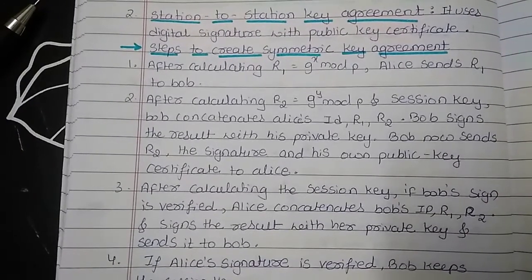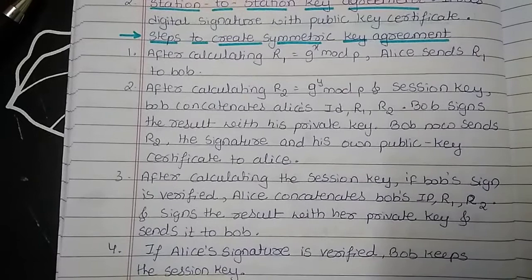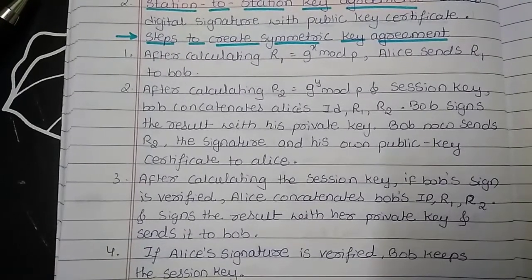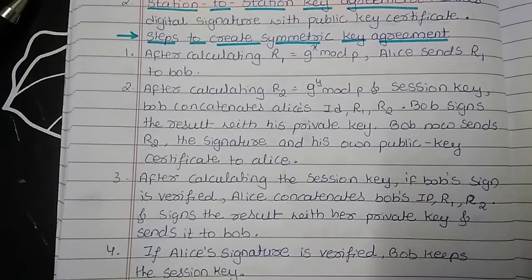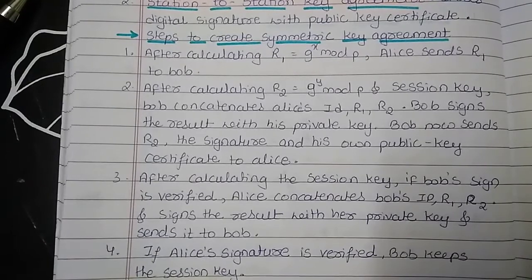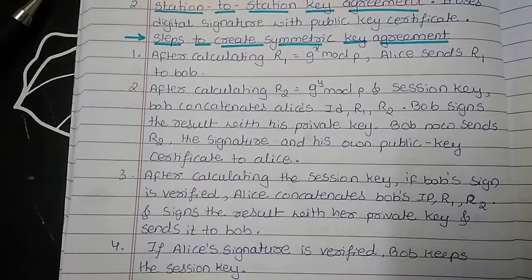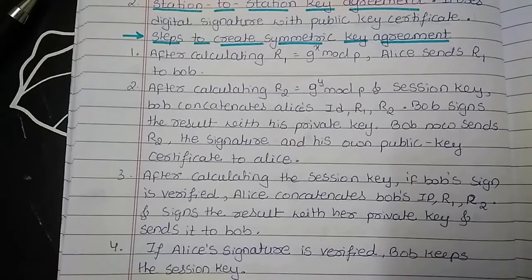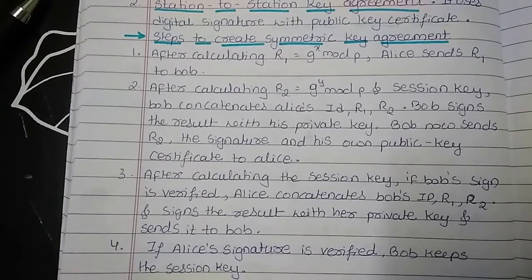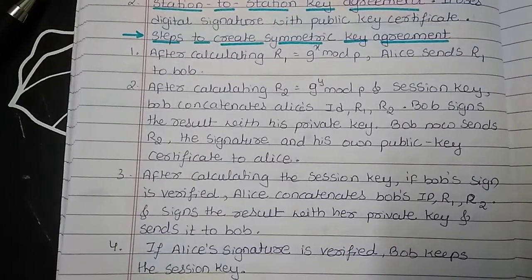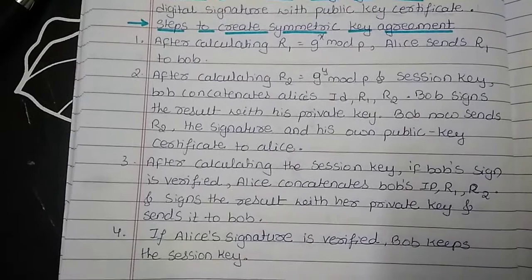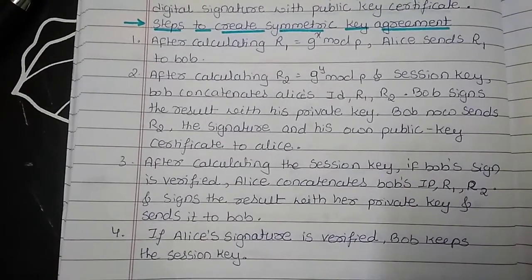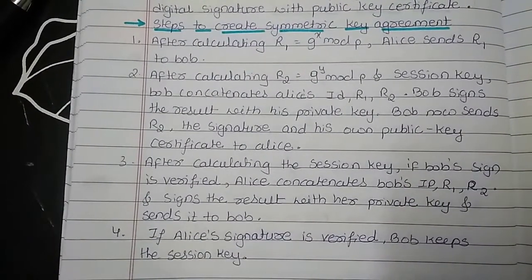On receiving all these things, Alice is going to calculate the session key. If Bob's signature is verified, Alice is going to concatenate Bob's ID, the value of R1 and R2, sign the result with her private key, and send it to Bob. If Alice's signature is verified, Bob is going to keep the session key. Thank you.